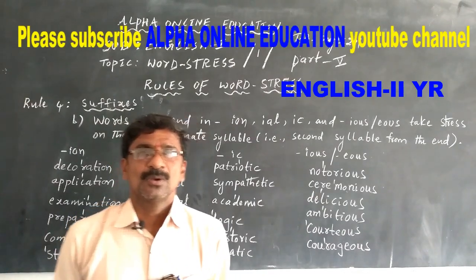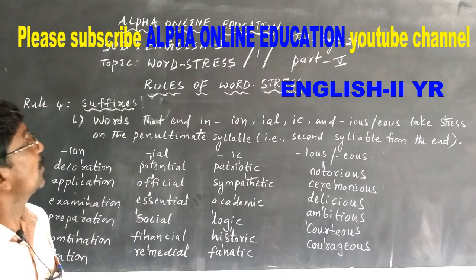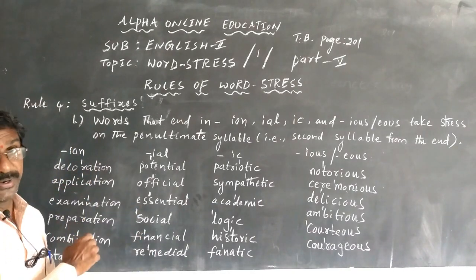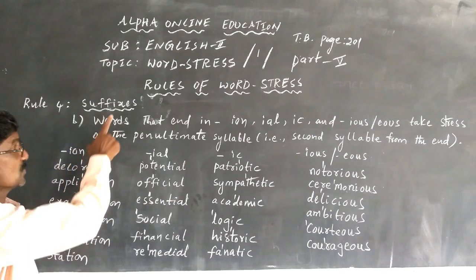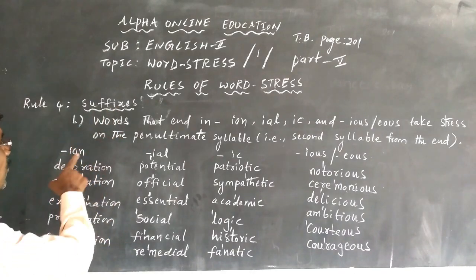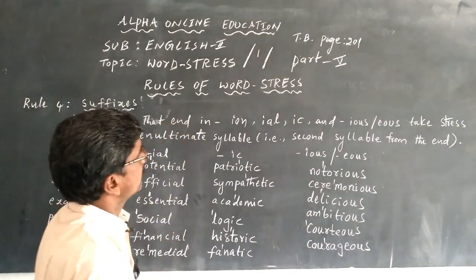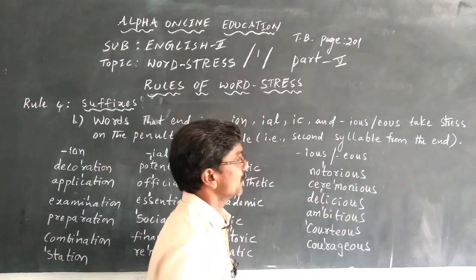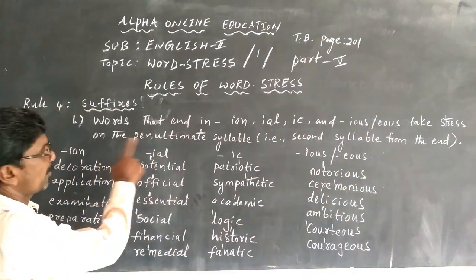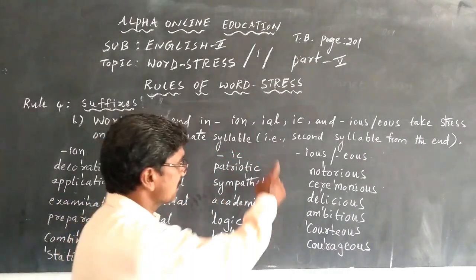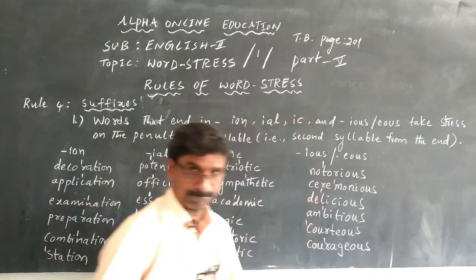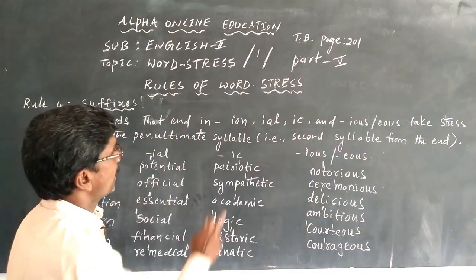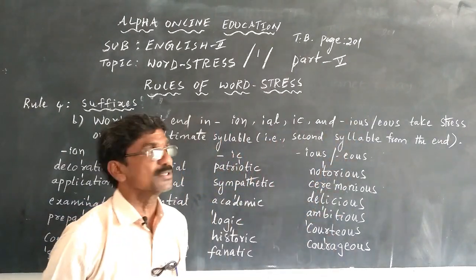Hi students. In the previous videos we covered some of the rules of word stress. Now we are going to discuss Rule 4 — Suffixes. Rule 4B: words that end in -ion, -ial, -ic, -ious, and -eous take stress on the penultimate syllable, that means the second syllable from the end.